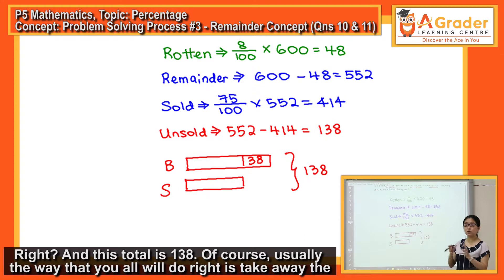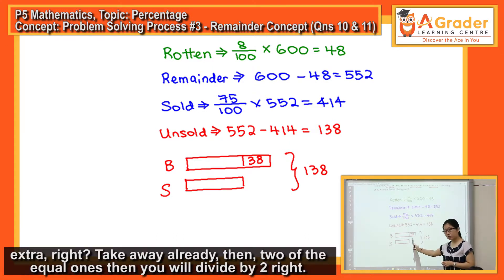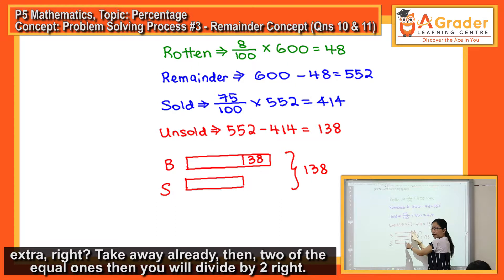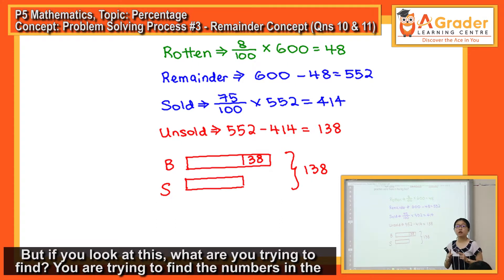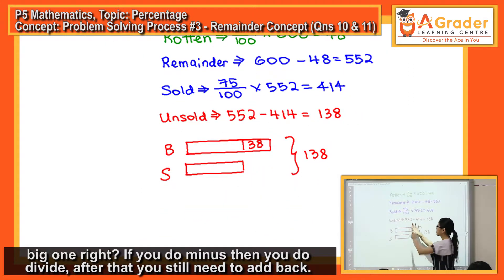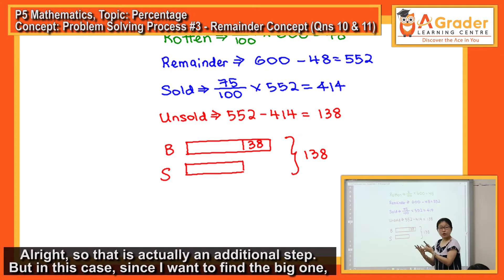Of course, usually the way that you all will do is take away the extra, right? Take away already, then two of the equal ones, then you divide by two. But if you look at this, what are you trying to find? You're trying to find the numbers in the big one. If you do minus, then you do divide, after that you still need to add back. That is actually an additional step.